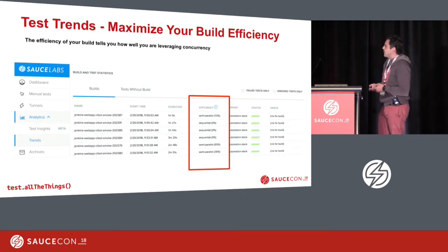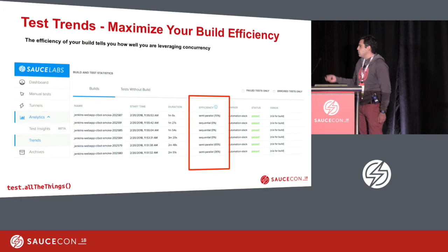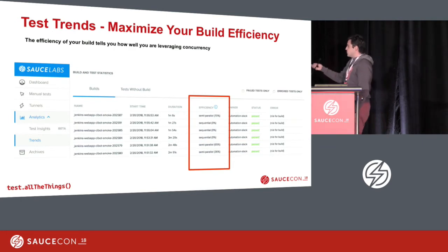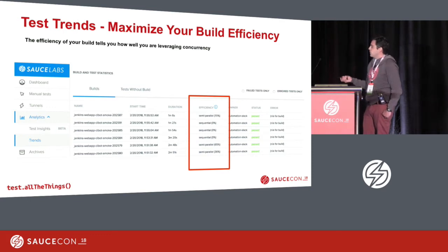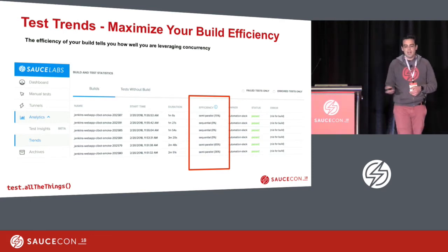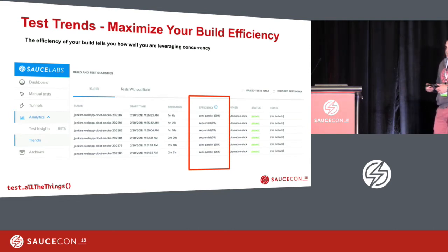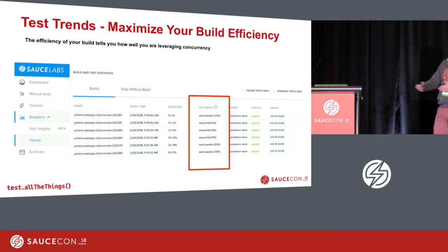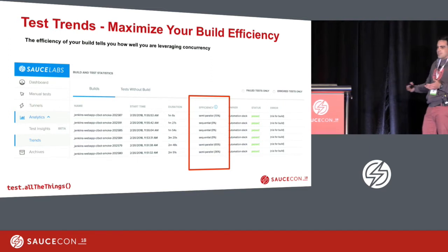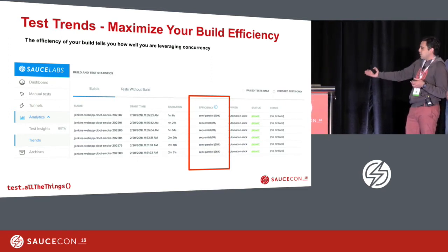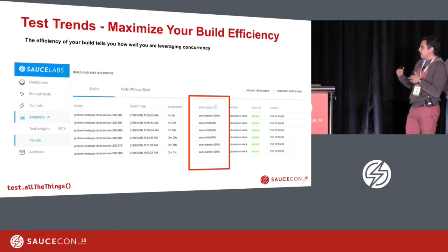In our analytics UI, we have a concept called build efficiency on the analytics trends page, which shows every one of your builds, how long it took to run, and an efficiency column that's really important to keep an eye on. This concept looks at your longest job and assesses whether your build is taking longer than your longest job. Ideally your build is as fast as your longest job — if you're at 100%, you're running as parallel as you could be.